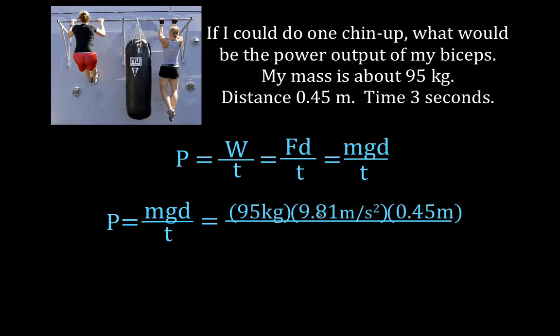The acceleration due to gravity is 9.81 meters per second squared. The distance we said is 0.45 meters and three seconds. And that means that my power output when I lift my 95 kilogram body a distance of 0.45 meters in three seconds is 140 watts.